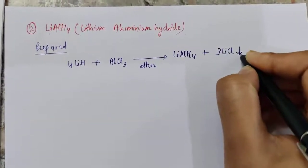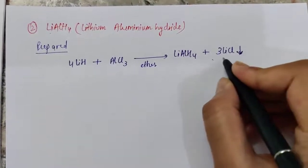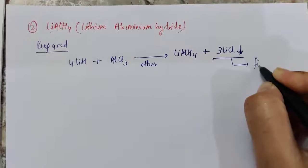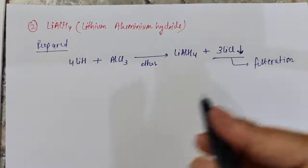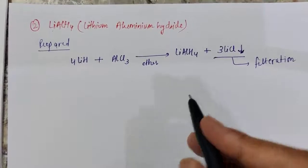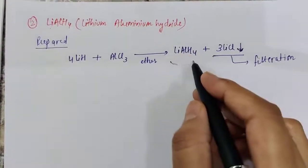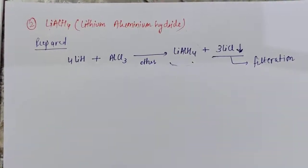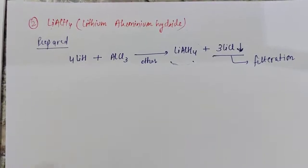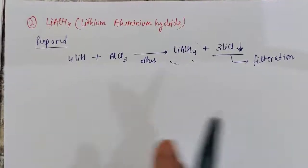Lithium chloride precipitates out and is removed by filtration. The filtrate will contain our solvent and our lithium aluminium hydride. The solvent removal is carried out in the absence of air and carbon dioxide to obtain lithium aluminium hydride.